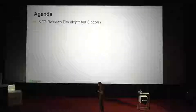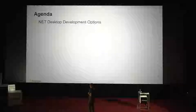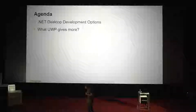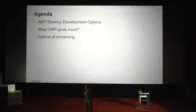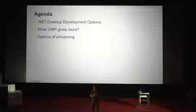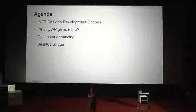First, I'm going to talk about the different options you nowadays have as a .NET developer for building desktop apps. I've already mentioned these are WPF, WinForms, and UWP. That introduction will be important for my next slide, which covers what UWP gives us more compared to the other two technologies. After that, I'm going to talk about the options of enhancement — is it possible to enhance your existing WPF or WinForms app using UWP features? We'll know that in a few minutes.